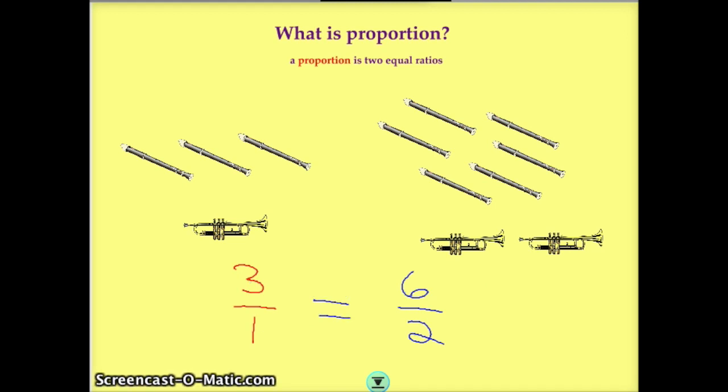One thing you do have to be careful of, though, with proportions is that your terms are in the right place. Over here, we have three to one, and this is recorders to trumpets. And this is six to two recorders to trumpets. I need to make sure that recorders go with recorders and trumpets go with trumpets. Otherwise, things don't work out. Let me show you an example.